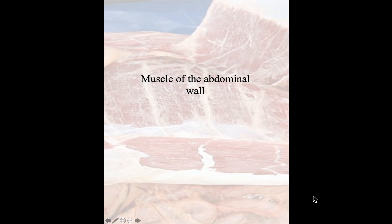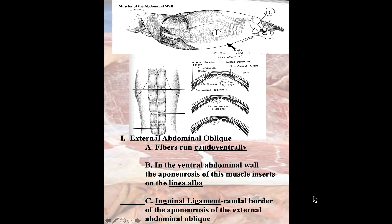In this lecture, I'm going to discuss the hypoaxial muscles found in the abdominal region, and specifically the abdominal muscles. We have four muscles: the external abdominal oblique, the internal abdominal oblique, the transverse abdominal muscle, and the rectus abdominal muscle.